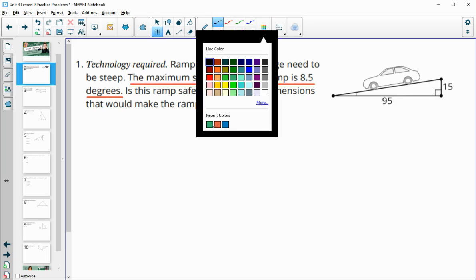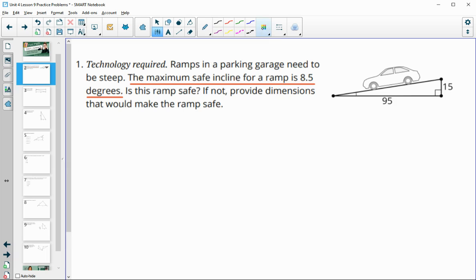So in order to determine the size of an angle, you still want to label the sides. If we're looking for this angle, the side across from it, the 15, is the opposite side. And then the one next to it is the adjacent side and the one that the car is on is the hypotenuse.